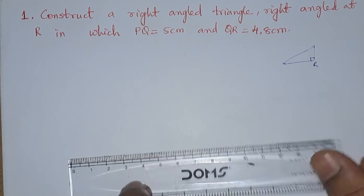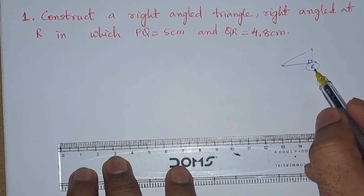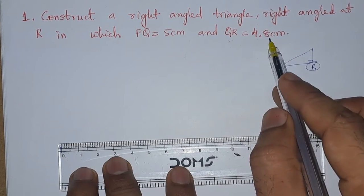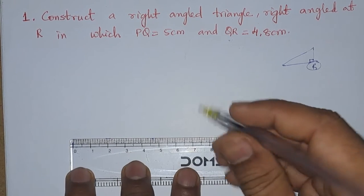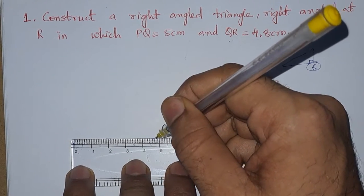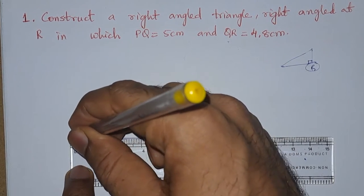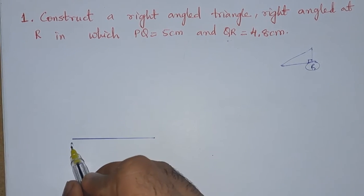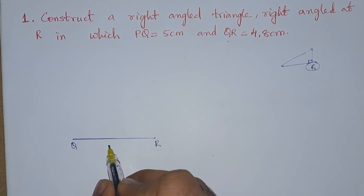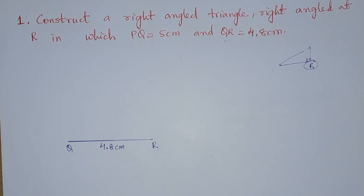First we will draw the base. They are asking for the right angle at R, so we are making QR as the base to get the right angle at R. QR is 4.8 centimeter, so we draw 4.8.